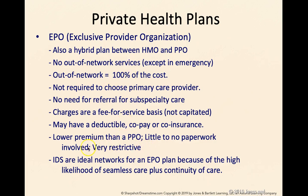EPOs operate ideally within the network of an integrated delivery system because seamless continuity of care is available there. For instance, Montefiore has an EPO — if that's your plan, you just stay within Montefiore. Because it's within one integrated delivery system, there's almost no paperwork at all. For as long as this EPO is accepted across the whole health system, like Mount Sinai, you can go wherever. It's cheaper than a PPO — almost the price of an HMO — but more restrictive.